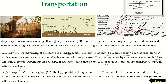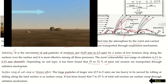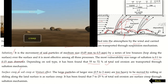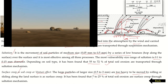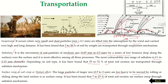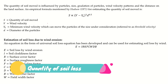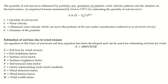Surface creep, also called the venturi effect, involves large particles greater than saltation particle size — specifically 0.5 to 2 mm — which are too heavy and are moved by a rolling action along the ground surface due to wind velocity. Soil loss in surface creep is about 7 to 25 percent. The quantity of soil moved depends on soil particle size, gradation, and wind velocity.